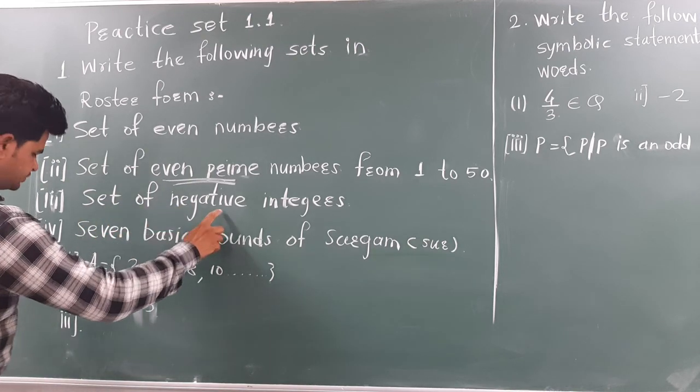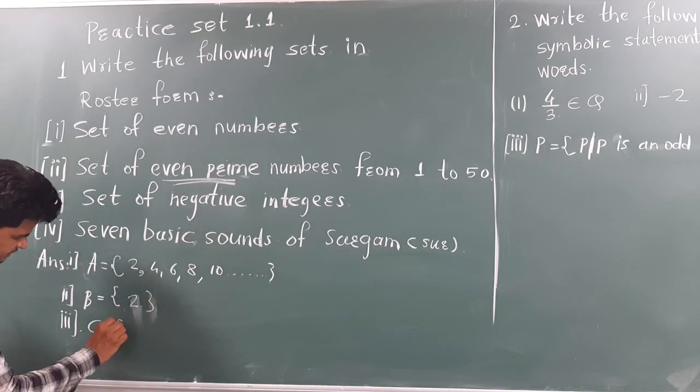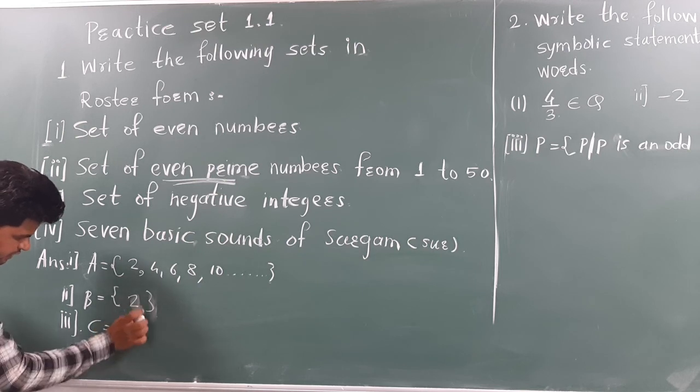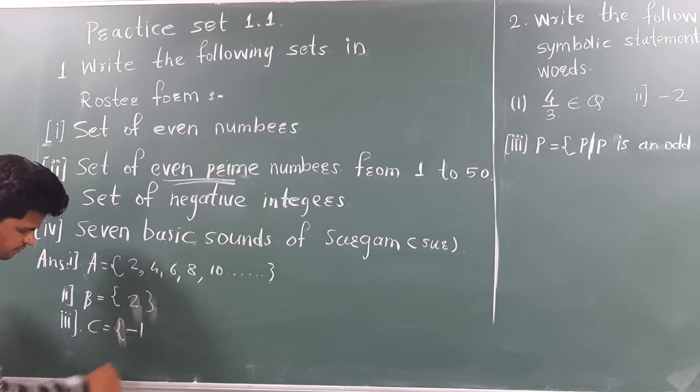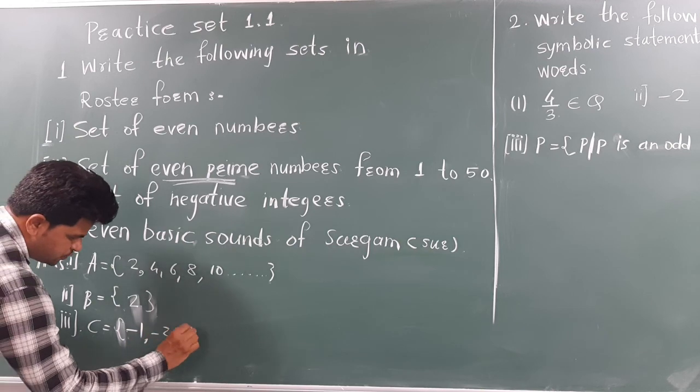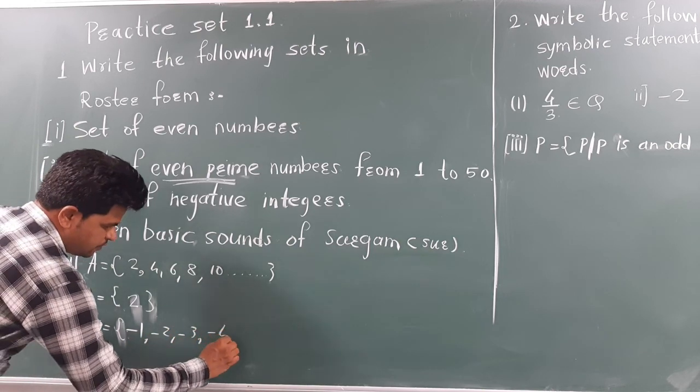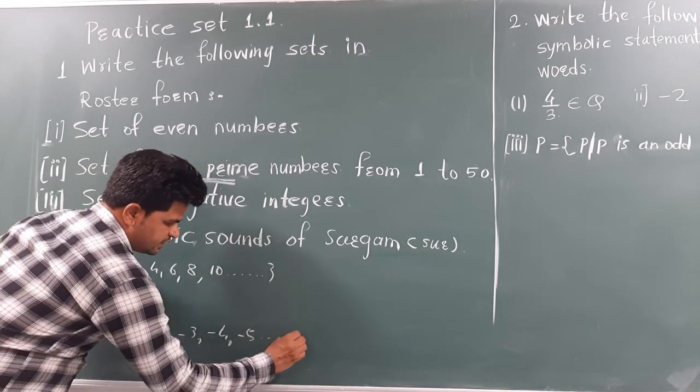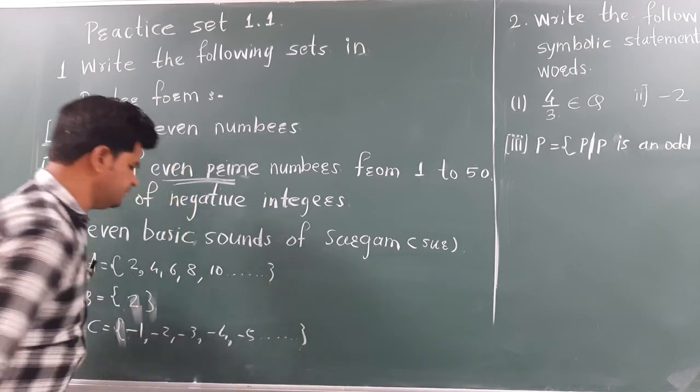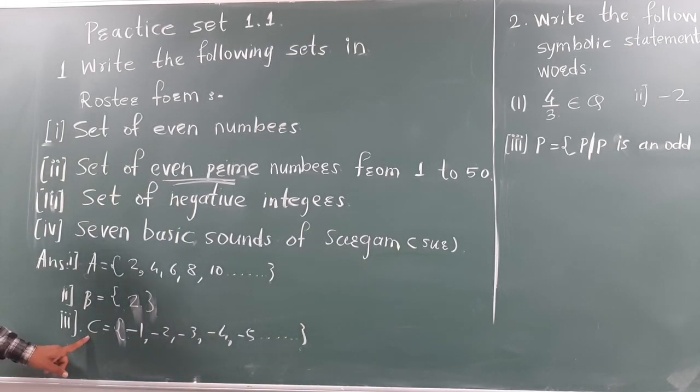Now, third. Set of negative integers. We are taken as set as a C. We are taken as curly bracket here. Negative numbers, minus 1, minus 2, minus 3, minus 4, minus 5, and that is this. Infinite numbers, negative integers, we can write here in set C.